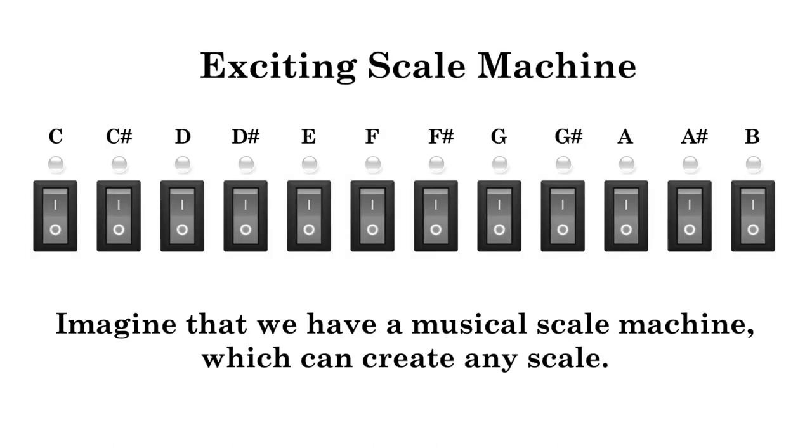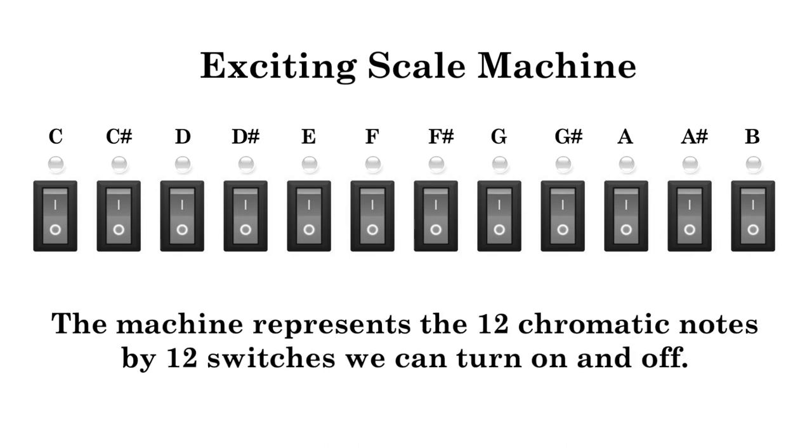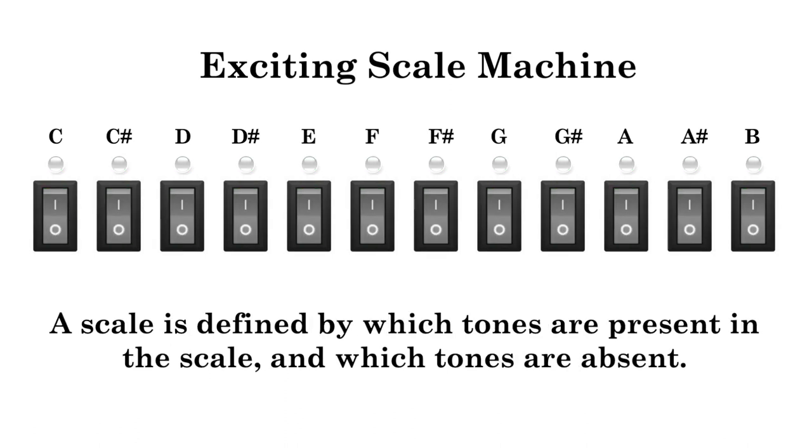Imagine that we have a musical scale machine which can create any scale. The machine represents the 12 chromatic notes by 12 switches we can turn on and off. A scale is defined by which tones are present in the scale and which tones are absent.